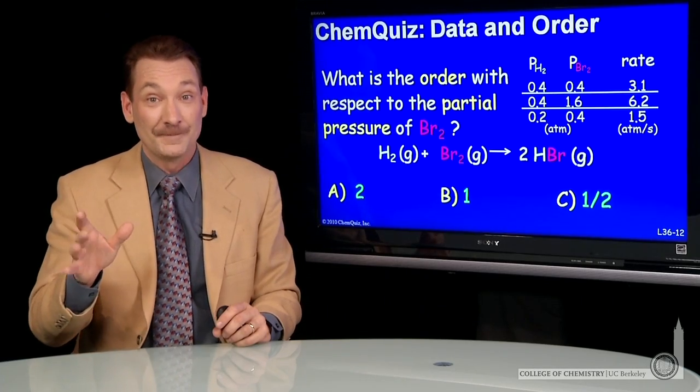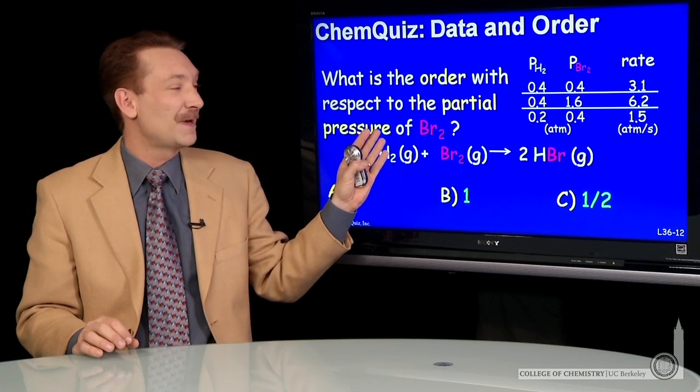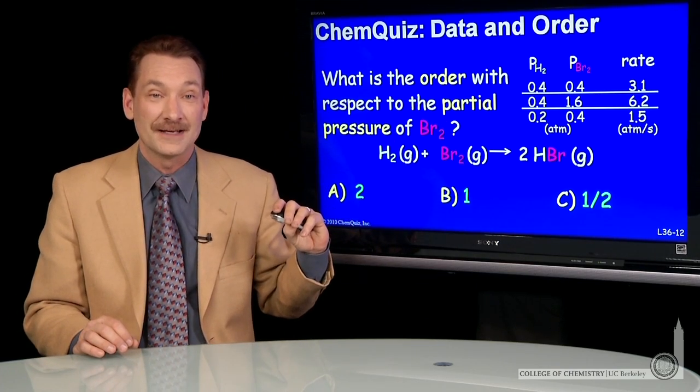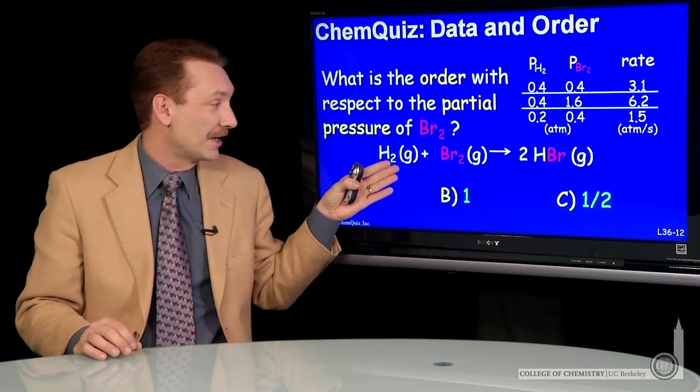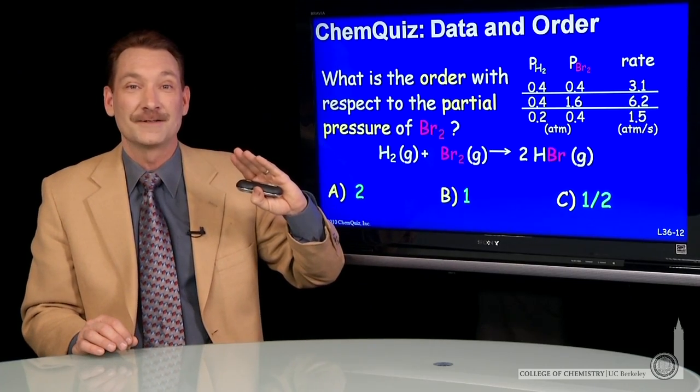Let's look at a chemical reaction and some data and see if we can determine the rate orders. So what's the order with respect to the partial pressure of bromine gas in this chemical reaction? Hydrogen gas plus bromine gas makes hydrogen bromide gas.